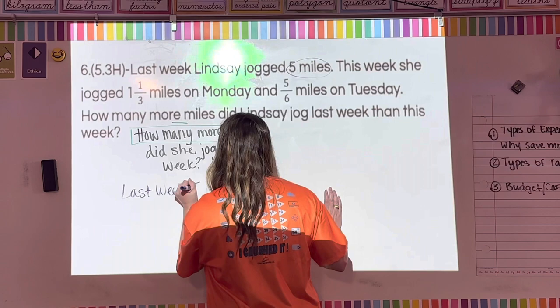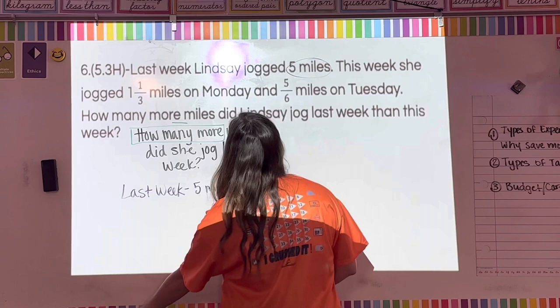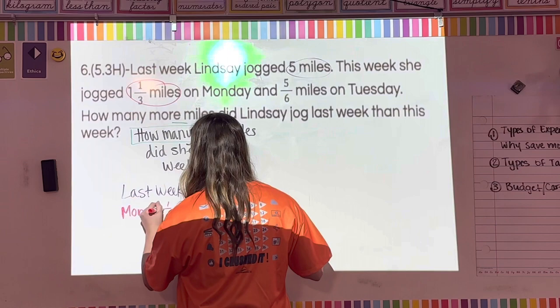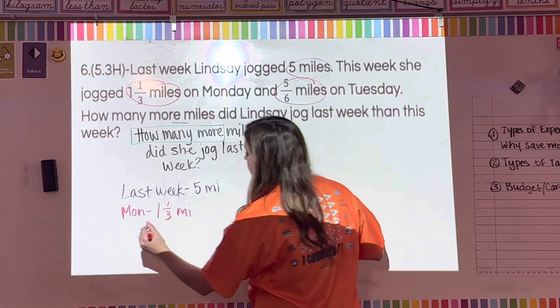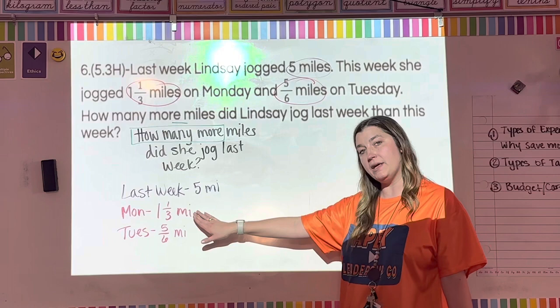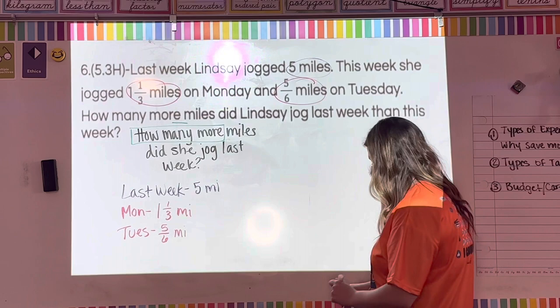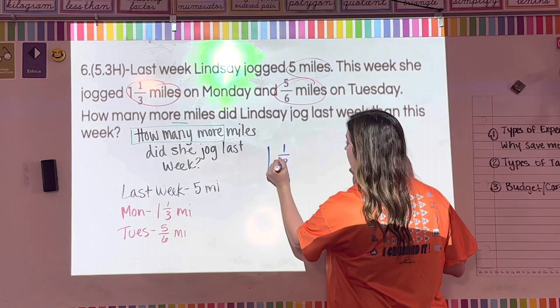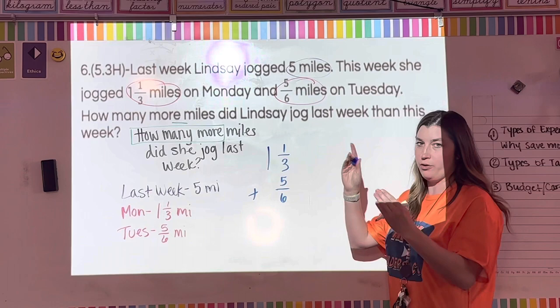Let's pull out the information: last week = 5 miles. This week: Monday = 1 and one-third miles, Tuesday = five-sixths miles. Before I can subtract, I need to add Monday and Tuesday together. So I'll add one and one-third plus five-sixths.